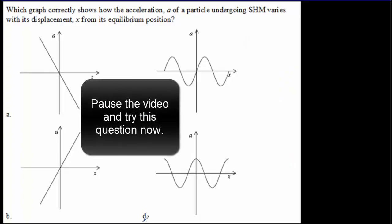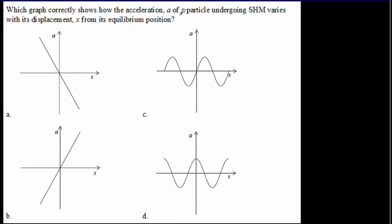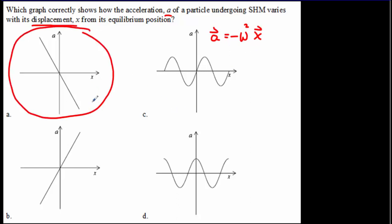Here are a few IB questions. For a correct graph of acceleration against displacement: remember, acceleration is in the opposite direction as the displacement and they are proportional to one another. So the correct answer is graph A — a straight line through the origin with a negative slope.